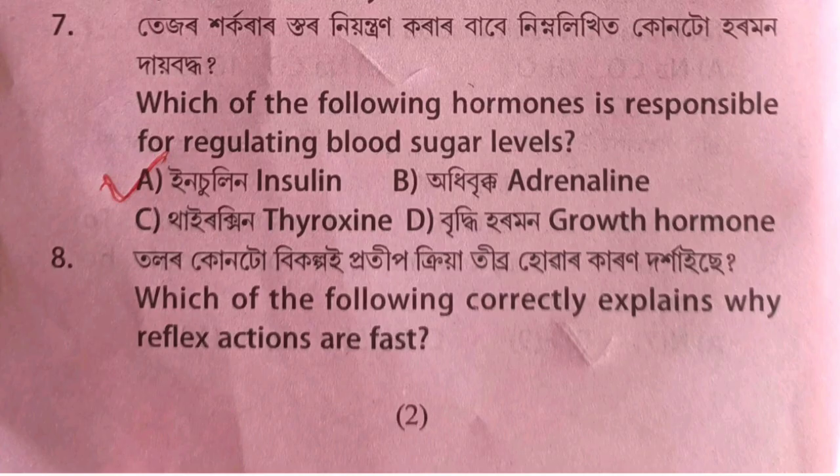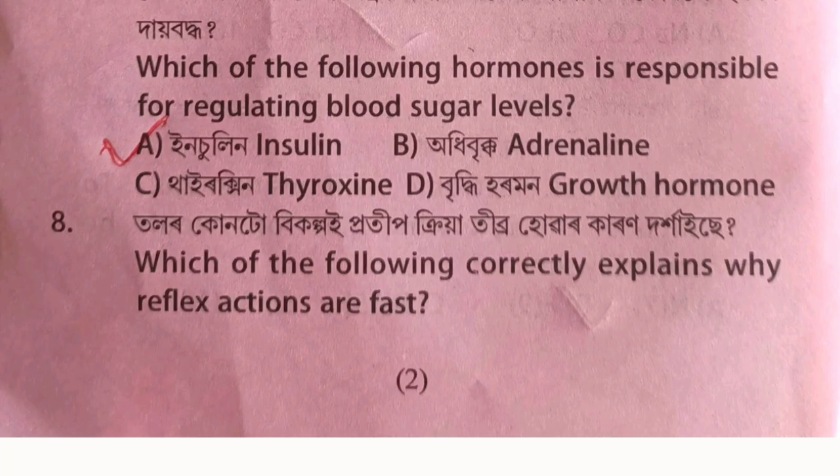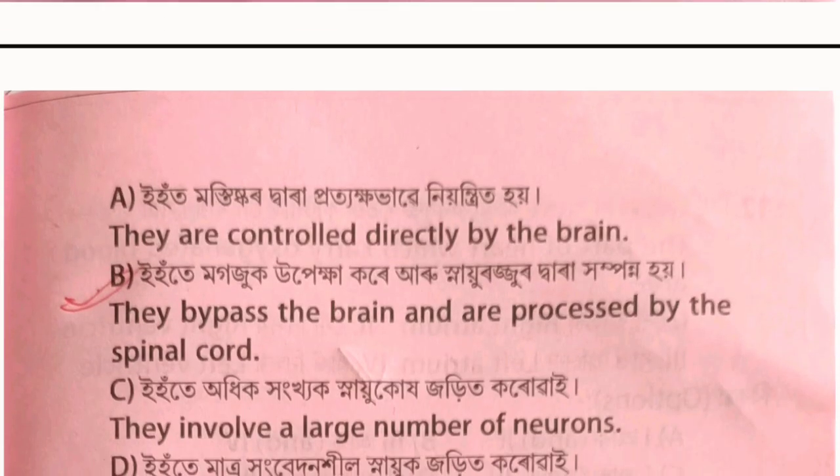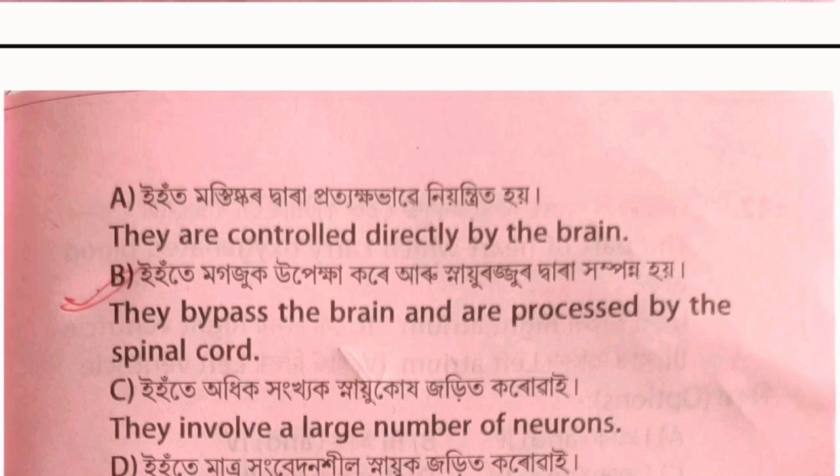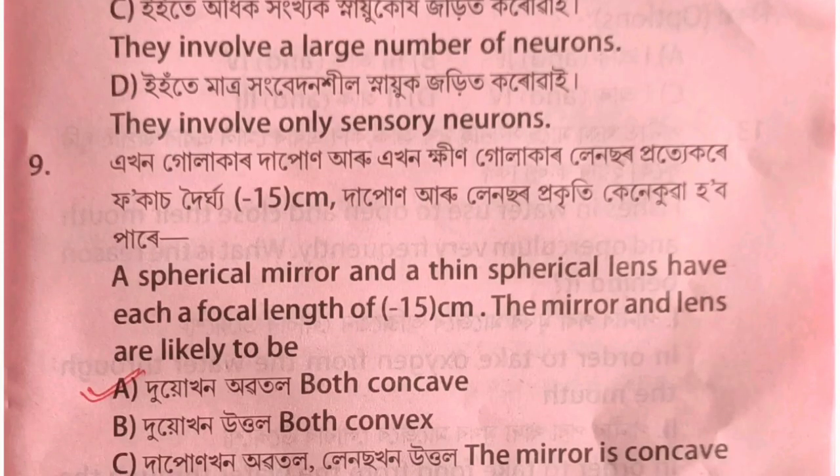Which of the following correctly explains why reflex actions are fast? Option B is discussed — reflex actions bypass the brain and travel through a narrow, direct pathway allowing very rapid response.